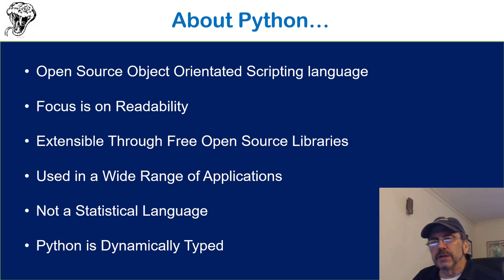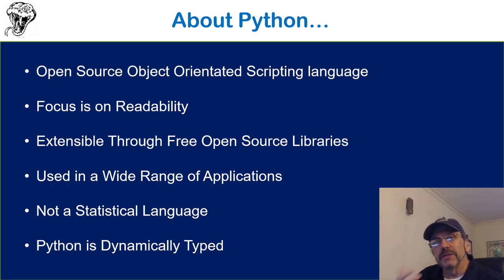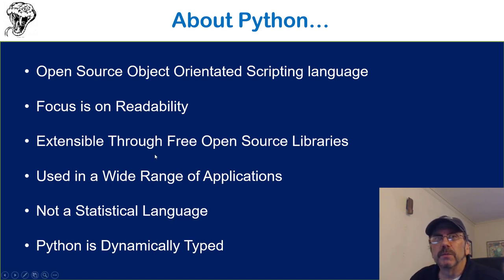Python is what's called a dynamically typed language. When you create new variables, you do not tell it what the variable type is. Because Python is dynamically typed, it lets you create variables on the fly and put whatever you want into them. That can add overhead and also open you up to potential bugs, because people could put things in that you weren't expecting.